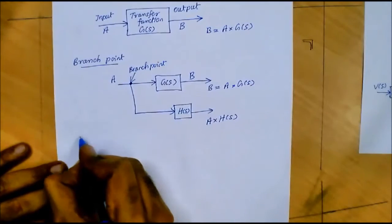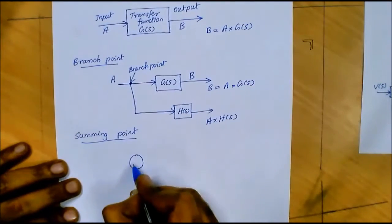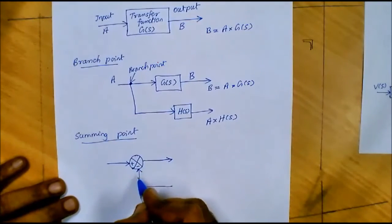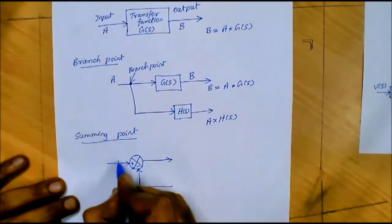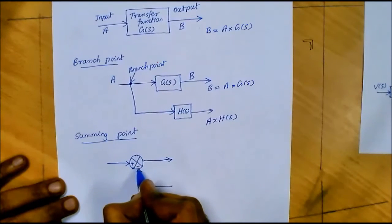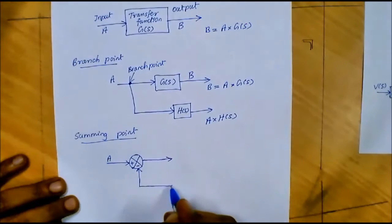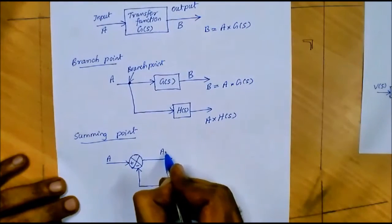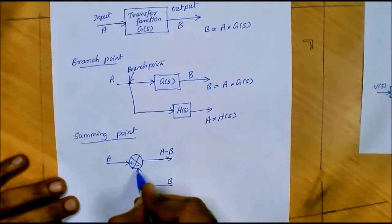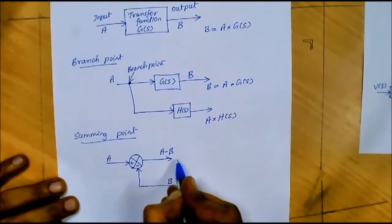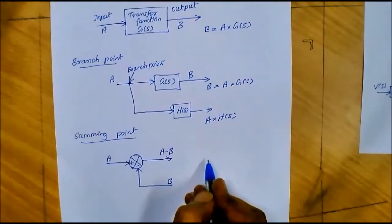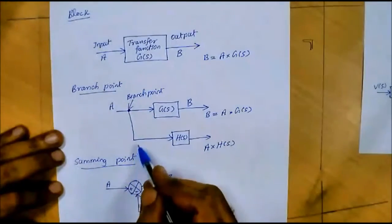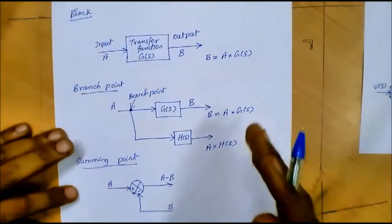Next let us consider the summing point. Summing points are used to add or subtract more than one signal. For example, at a summing point with a plus and a minus, if we supply signal A and signal B, the output will be A minus B. If we have a plus symbol instead, the output will be A plus B. Using block, branch point, and summing point, we can represent any real-time control system in block diagram form.